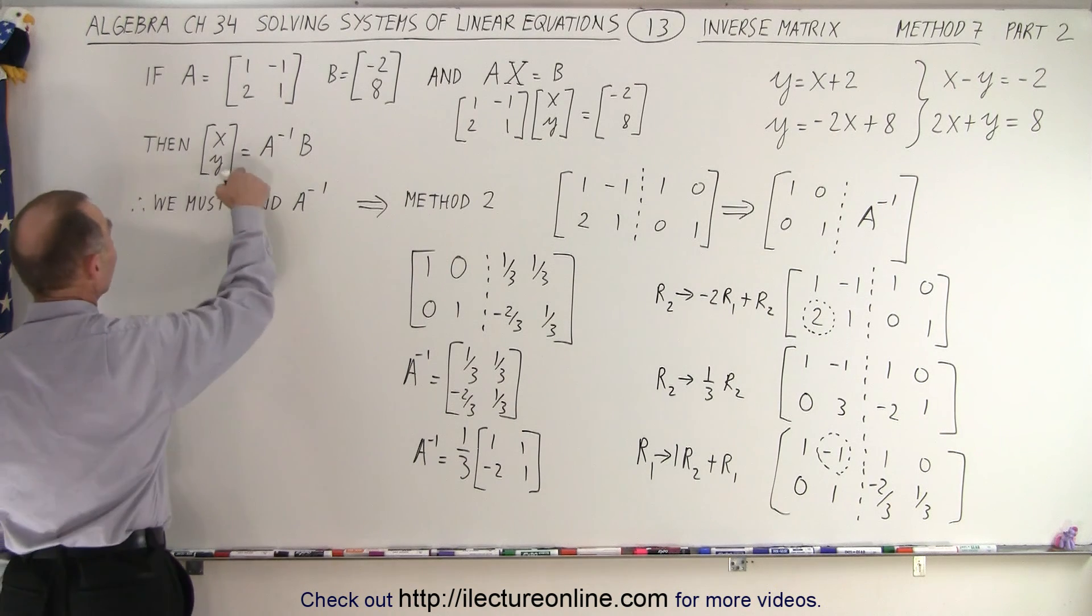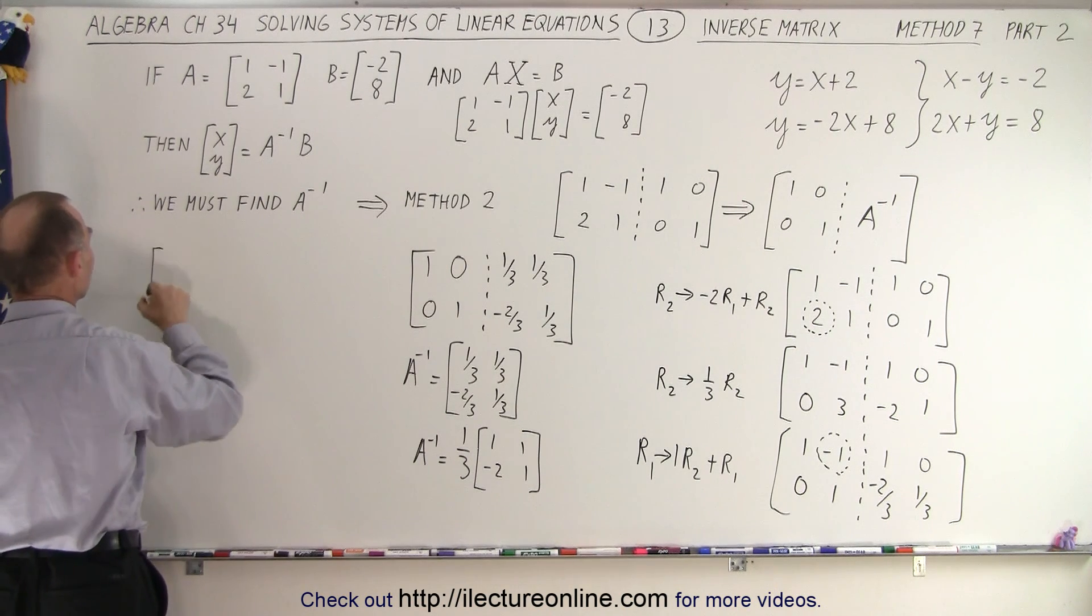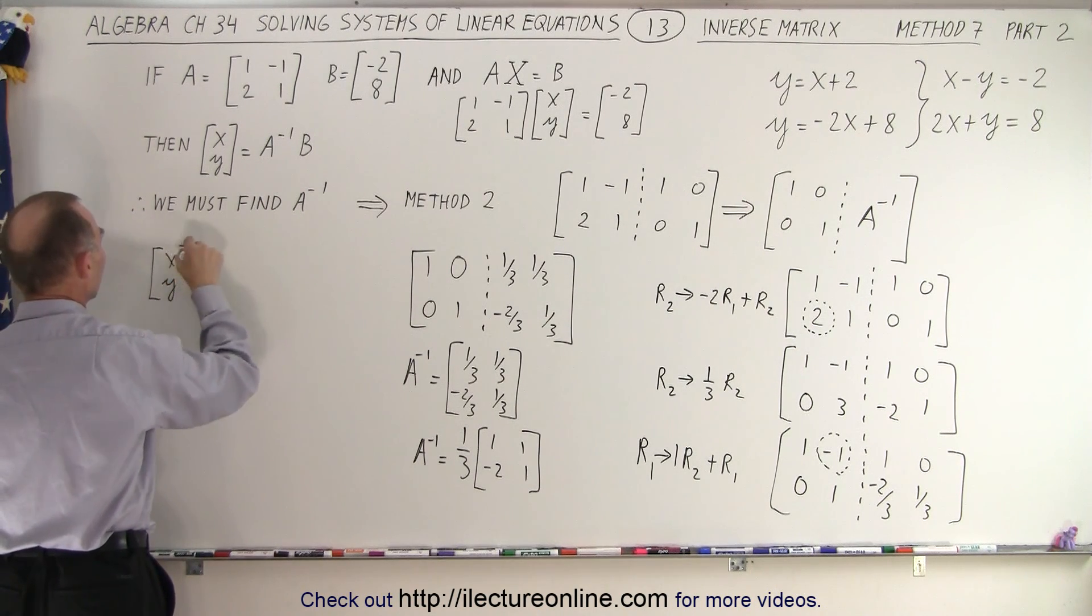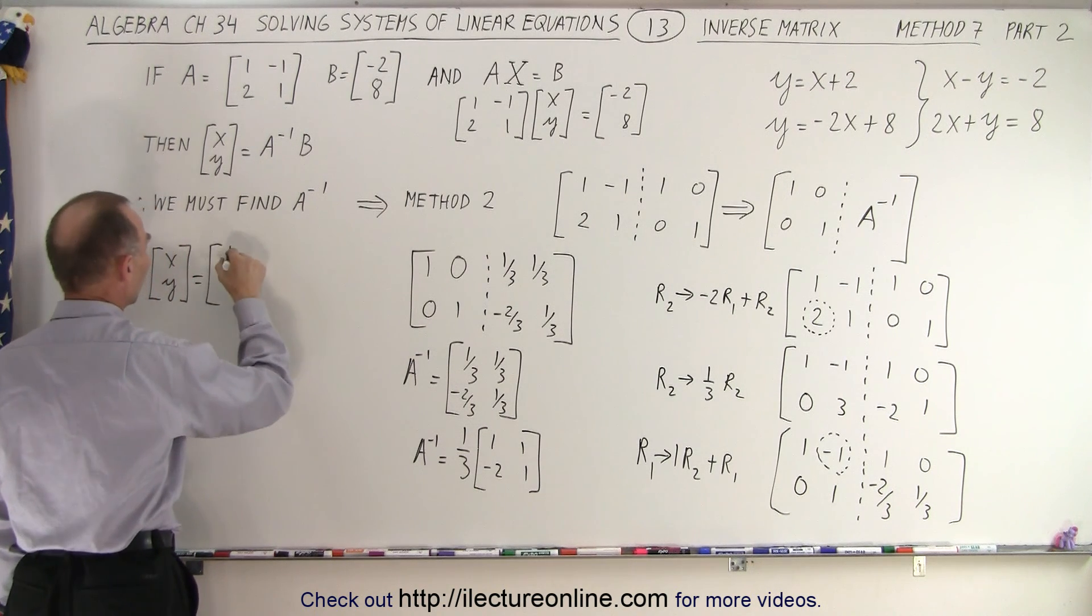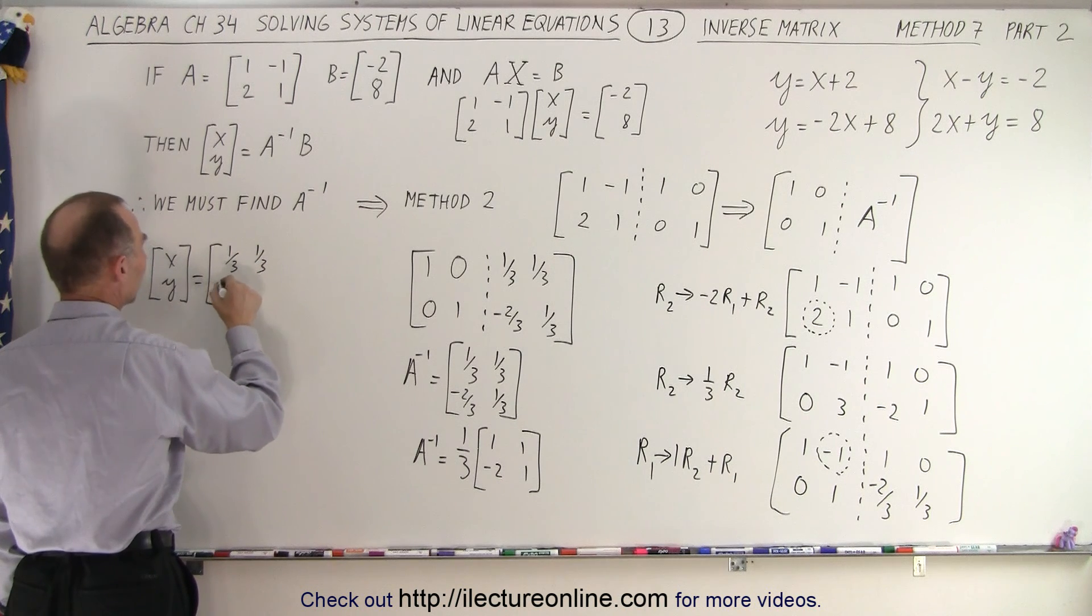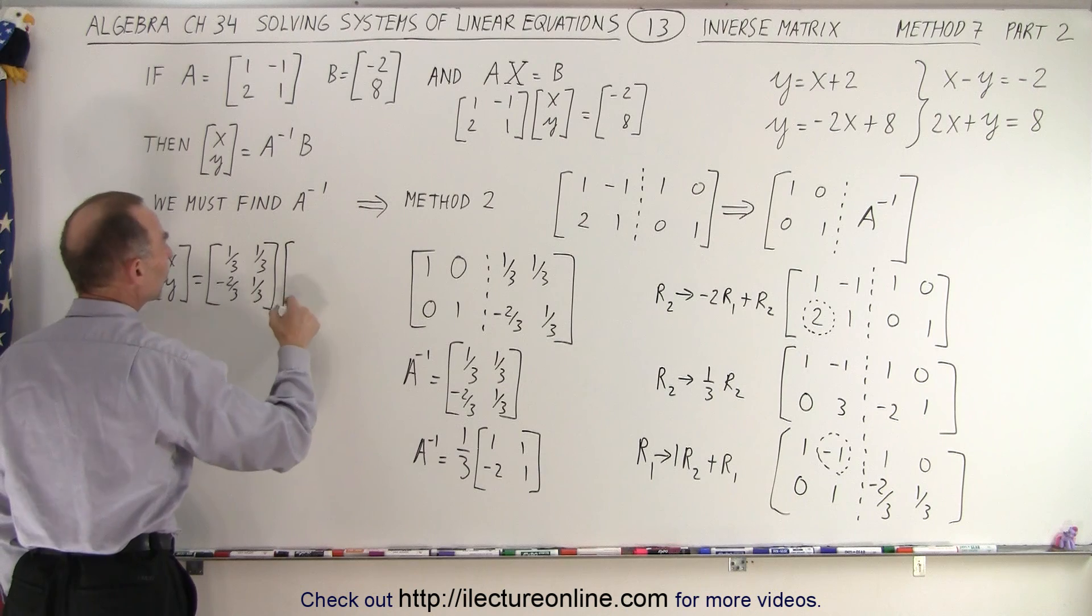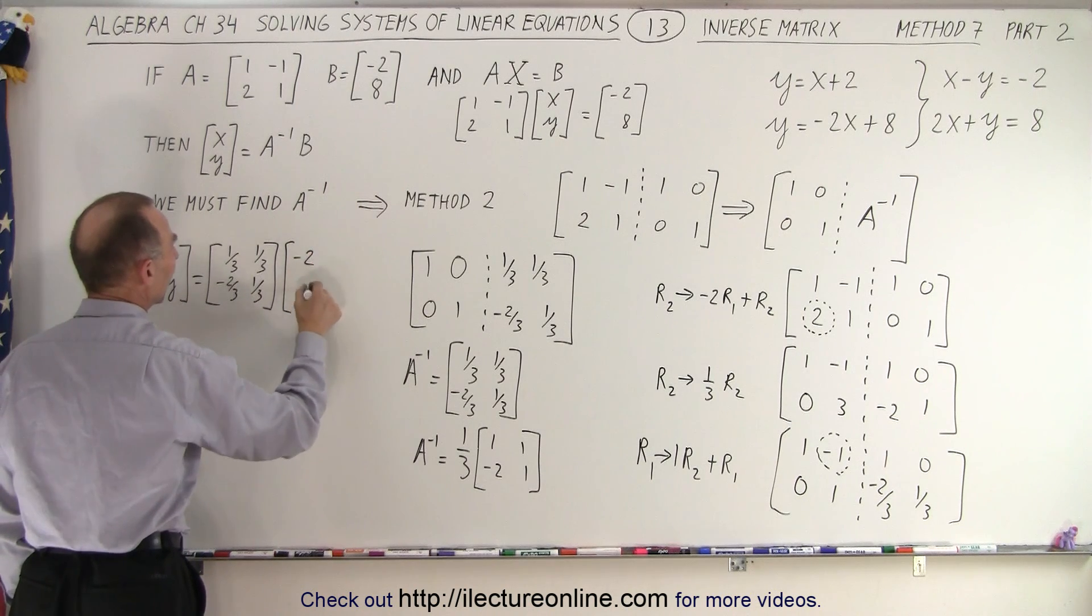And then we realize that to get X and Y, all we have to multiply is the inverse matrix, which is 1 third, 1 third, negative 2 thirds, 1 third. We multiply it times the B matrix, which was a negative 2 and 8.